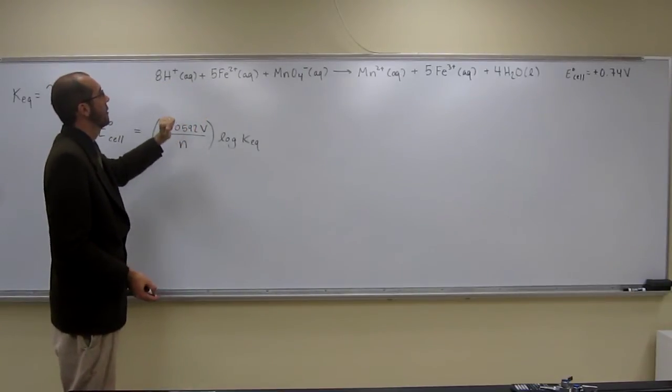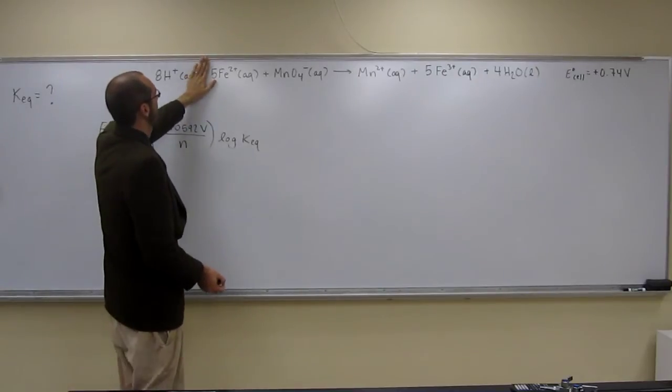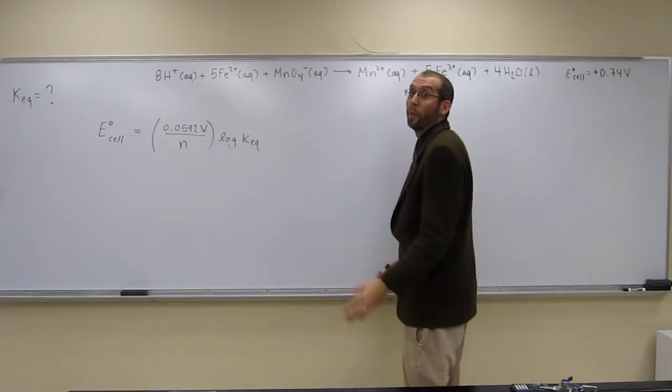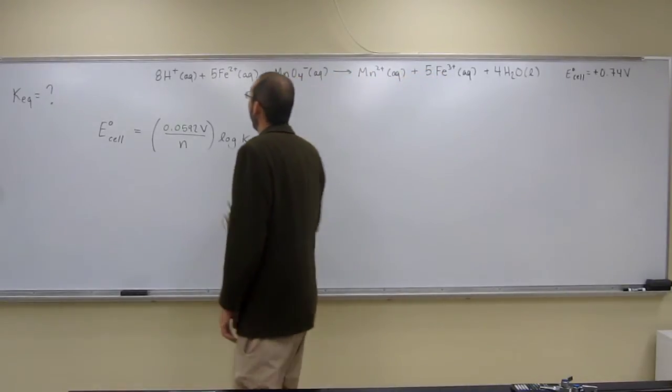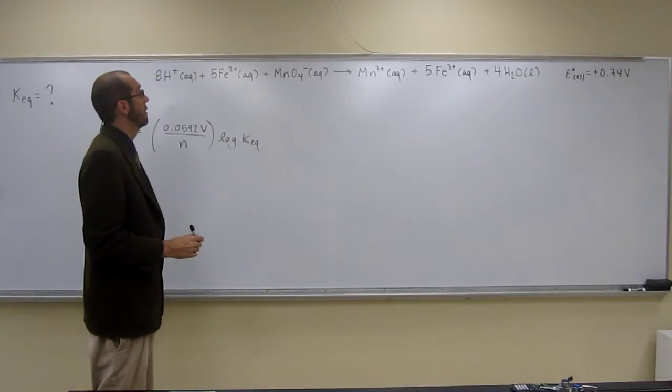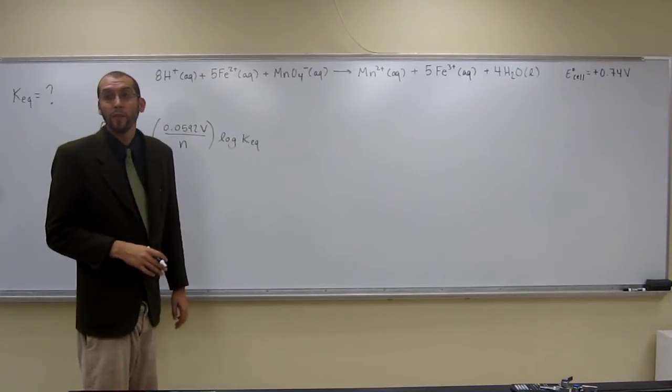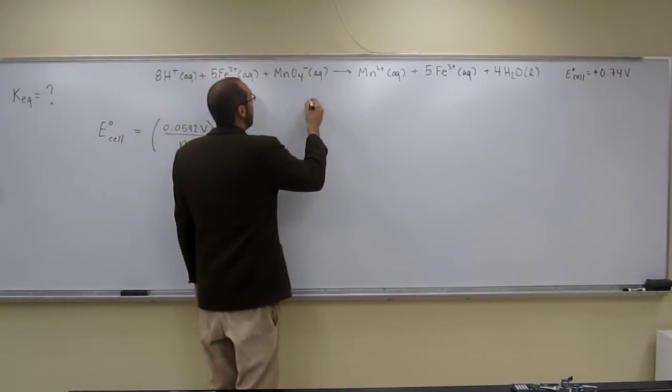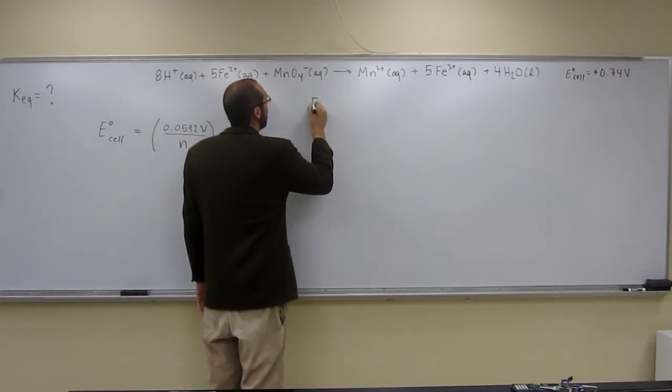And it's an acidic solution, so we can kind of avoid worrying about that part, if you remember how to balance an acidic solution. In fact, all you really have to do is figure out one of these half reactions, and the other one will be the same amount of electrons transferred. Let's just do one for right now, the more obvious one.